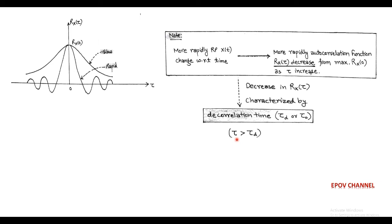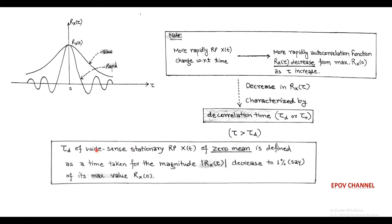In practice, all random processes are considered as wide-sense stationary random processes with zero mean. On the magnitude curve of the autocorrelation function, the decorrelation time tau_d is defined as the time at which the magnitude of the autocorrelation function decreases by 1% of its maximum value. Here, the 1% of magnitude is an assumed value.